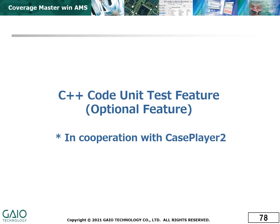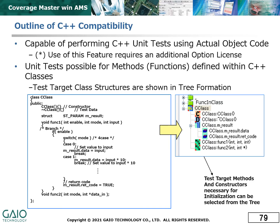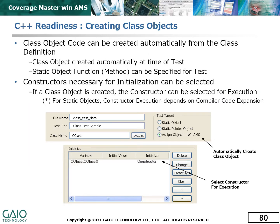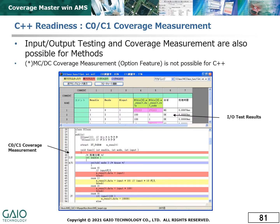Another optional feature we offer is unit testing readiness for C++ code. The C++ option allows testing of methods defined in C++ classes. For classes, object code is created for each instance of the class. CoverageMaster WinAMS can measure coverage for each of these objects, meaning that C0 and C1 level coverage testing are possible for C++ code.